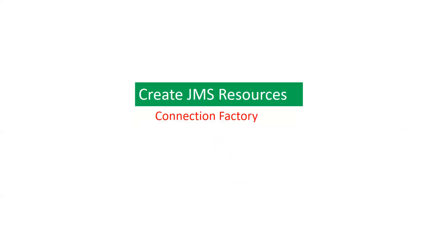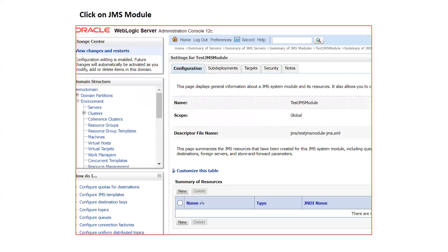Now the last step is to create JMS resources. As mentioned, you need to create a connection factory for your application to establish a connection with the JMS provider, and then configure a queue. All JMS resources — connection factories, topics, queues, distributed queues, distributed topics — need to be created inside your sub-deployment. Sub-deployment is a kind of grouping for these resources.